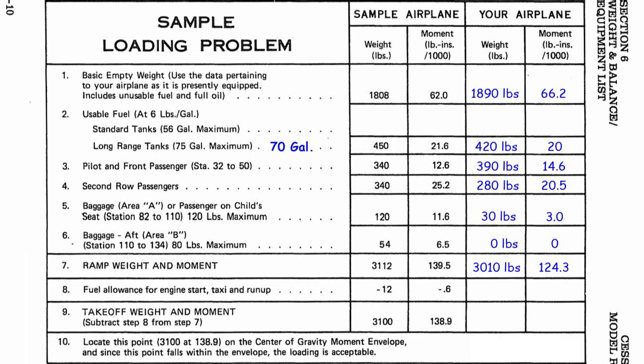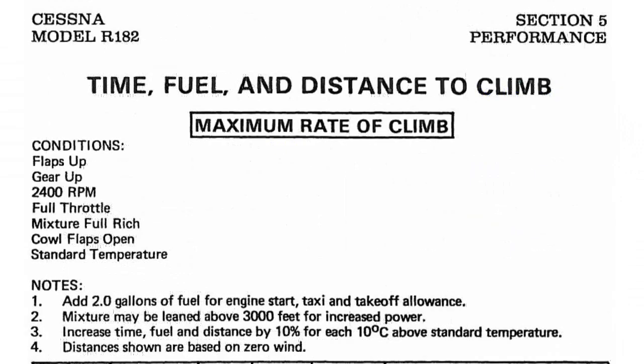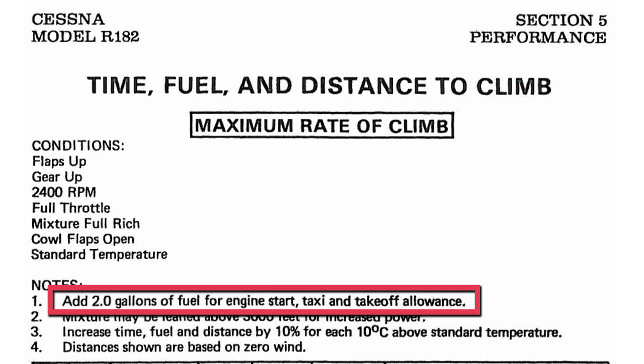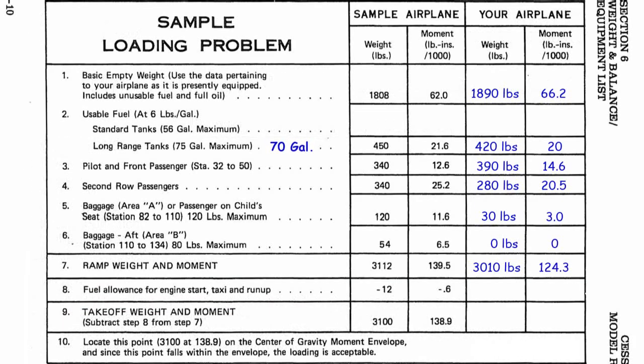But there's more to account for — we're going to start the airplane, taxi, do the run-up, and get clearances. According to Cessna, that takes two gallons of fuel. So we subtract 12 pounds (2 gallons × 6 lbs) from our weight, and following Cessna's sample problem, we subtract 0.6 from the moment. Taking 3,010 minus 12 gives us 2,998 pounds as our takeoff weight. And 124.3 minus 0.6 gives us a moment of 123.7. So our takeoff weight is 2,998 pounds with a moment of 123.7.